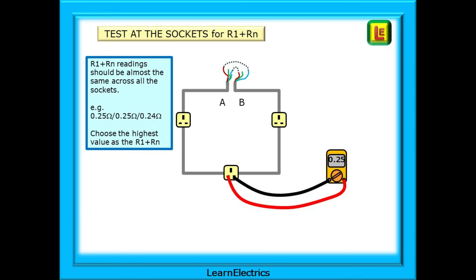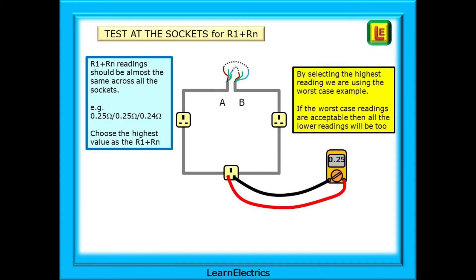And we choose the highest value as the big R1 plus Rn value. By selecting the highest reading, we are using the worst-case example. If the worst-case readings are acceptable, then all the lower-value readings will be acceptable too.